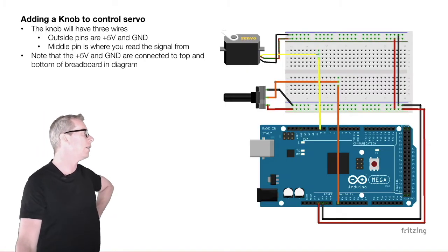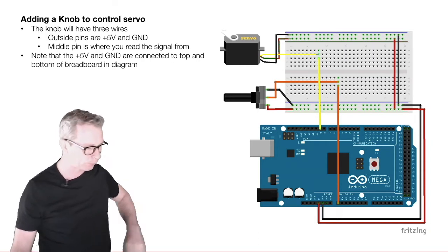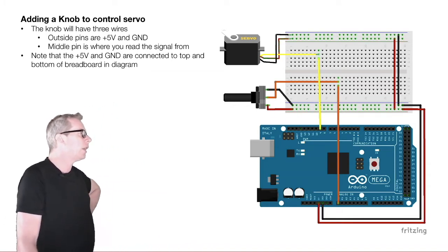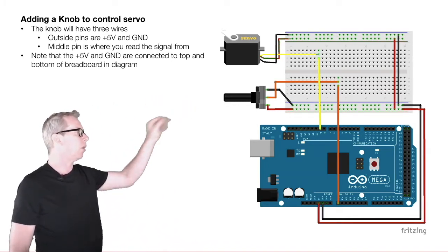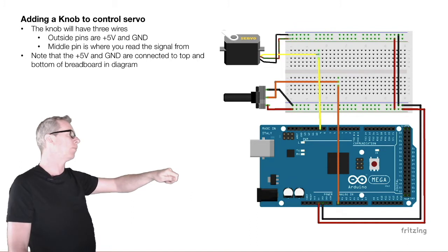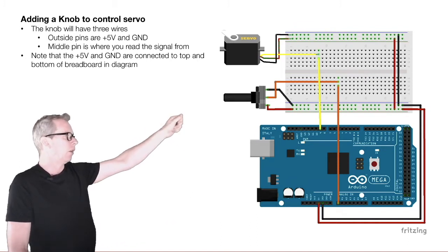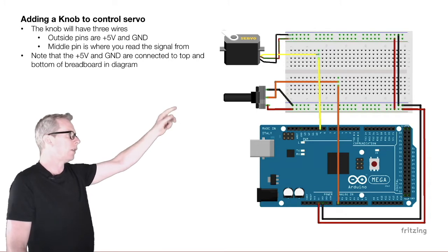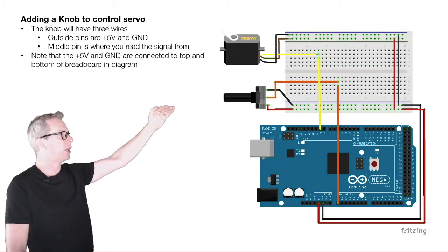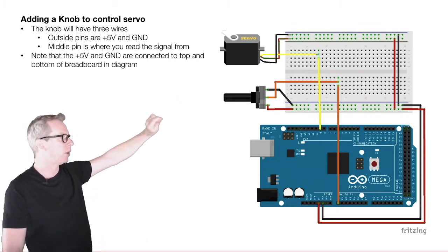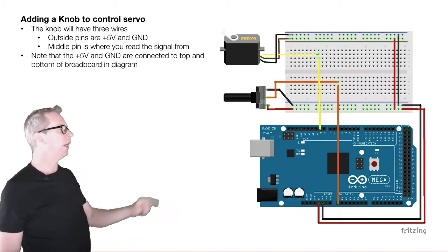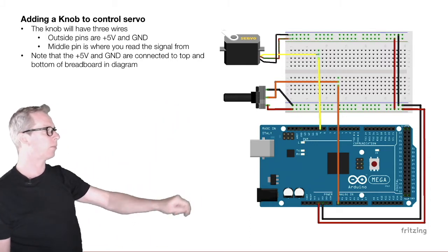The last example I'm going to look at is adding a knob to control the servo. Here we've got the same sort of servo setup but we've added a potentiometer — a knob that a user can turn to give some data into the Arduino. On that knob there's a ground pin and a plus-5-volt pin, and then the middle pin is where you get a signal from. Depending on where the person turns it, you get a different voltage out of that middle pin, and that's what we measure — you can see that's the orange wire going into analog pin zero.